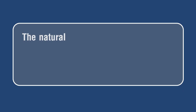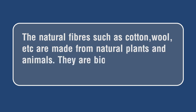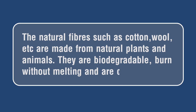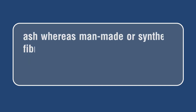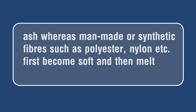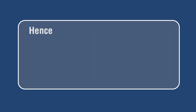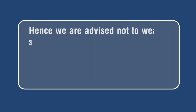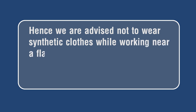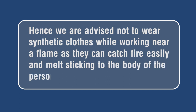Conclusion: Natural fibers such as cotton and wool are made from natural plants and animals. They are biodegradable, burn without melting, and are converted into ash. Man-made or synthetic fibers such as polyester and nylon first become soft, then melt to form a lump before burning. Hence, we are advised not to wear synthetic clothes while working near a flame, as they can catch fire easily and melt, sticking to the body of the person wearing them.